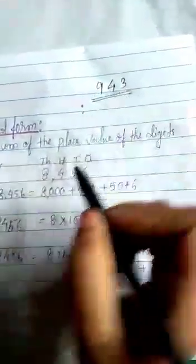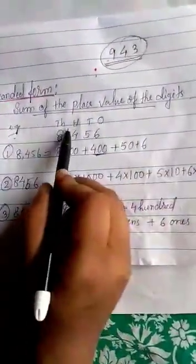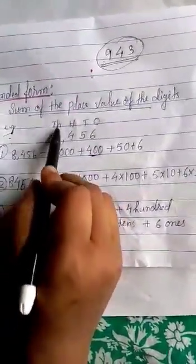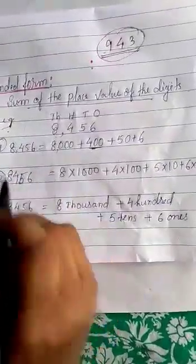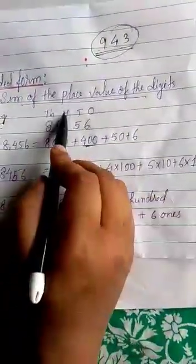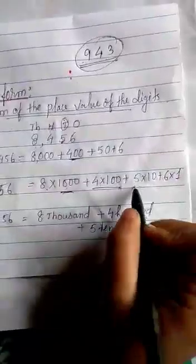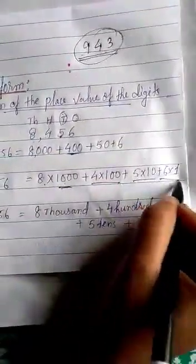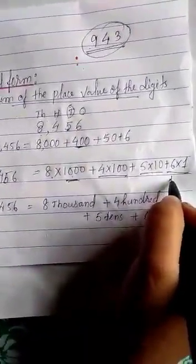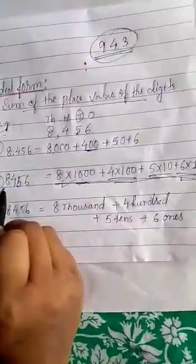You know how to read 943 as nine hundred forty-three. That is the short form. If you have to write in expanded form, that means we write the sum of the place values. Eight is in thousands place so it is 8 × 1000, four is in hundreds place so 4 × 100, five is in tens place so 5 × 10, and six is in ones place so 6 × 1. This is the expanded form of 8456.